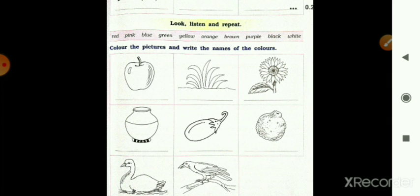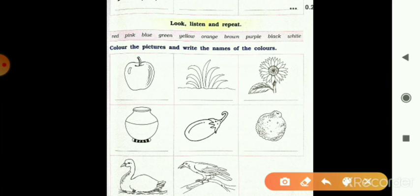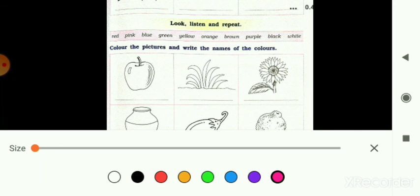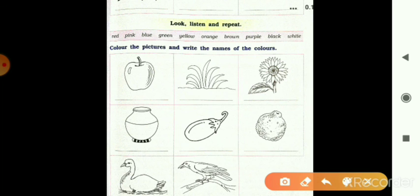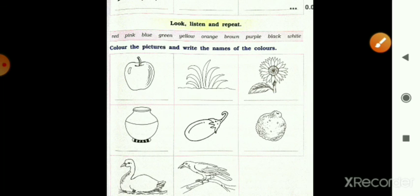Aapko karna hai yahan pe color. Jaisi ki first wala hai apple. To apple me kaun sa color aayega? Red. To aapko isme red color fill up karna hai aur phir likhna hai red. Isi tarah grass to green. Phir neeche likhna hai aapko usko green. Then sunflower hai to aapko yellow color fill up karna hai aur uske colors ka naam uske below likhna hai.